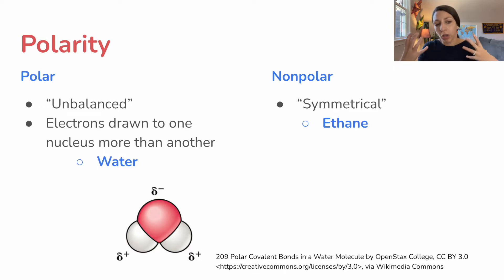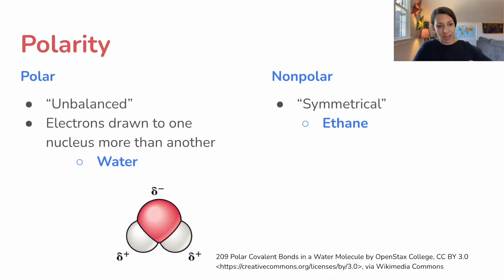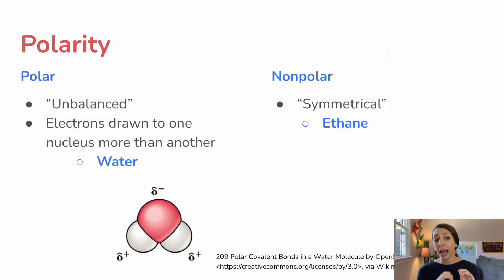With water — a large oxygen and two small hydrogens — we have an imbalanced charge, with a more negative side and a more positive side to the molecule. So water is a polar molecule, and it plays a really important role in biological systems due to its unique properties, which we'll cover tomorrow in day two.